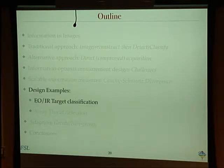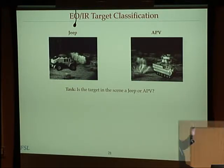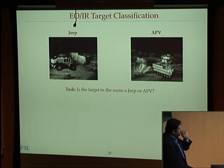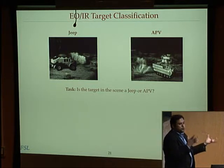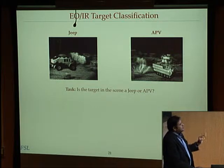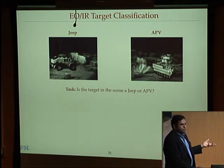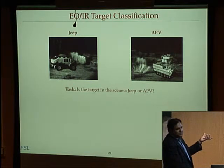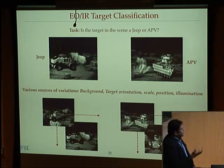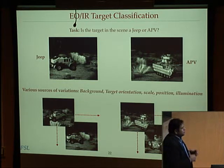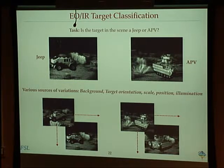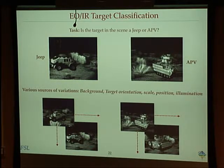Now we'll come to some design problems to show the utility of this. We start with a simple imaging problem in the optical domain, extendable to infrared. The simple task: in a given scene, there is always a target present, and it can only take two realizations — whether it's a Jeep or an APV. My only task is to decide which one it is — so there's one bit of information. What makes it hard is that the target can take different orientations and different scales depending on standoff distance, and backgrounds can be random. So it becomes a very complicated problem with a lot of variations — background, target orientations, scale, position, illumination — all of those things can vary. Despite its deceptive definition, this is a very hard task.